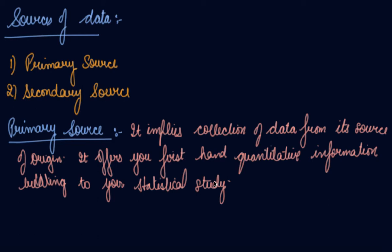Let's suppose you want to analyze the quality of life of people in your town — for example, in terms of per capita expenditure of different households. You decide to collect the basic data yourself through statistical surveys, with the help of investigators or field workers. You go house to house and ask people their total monthly expenditure. By doing this exercise you are relying on the primary source of data — that is first-hand information.